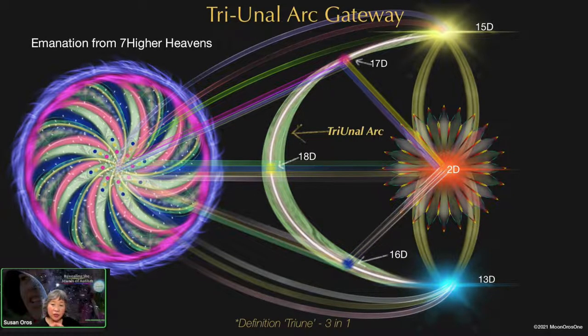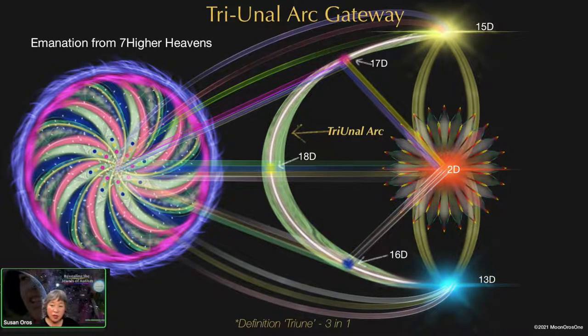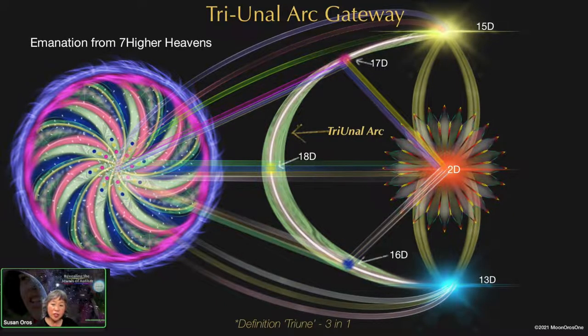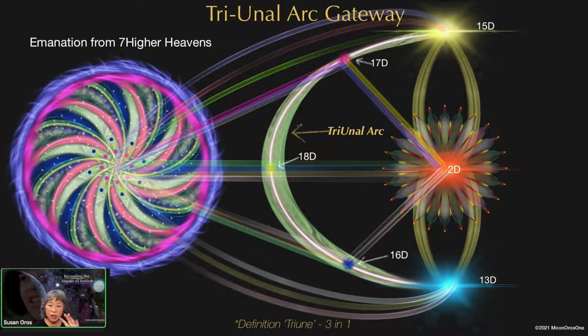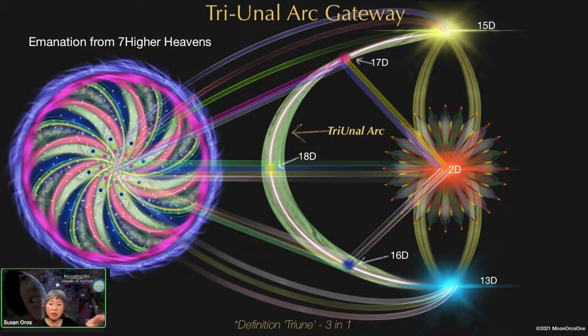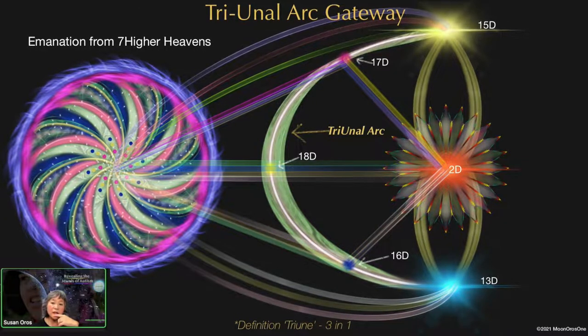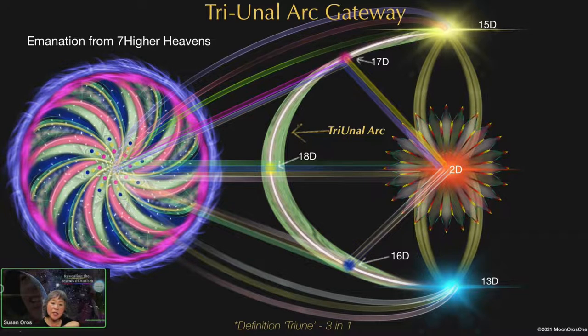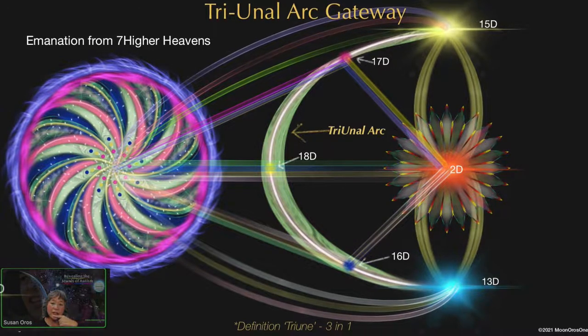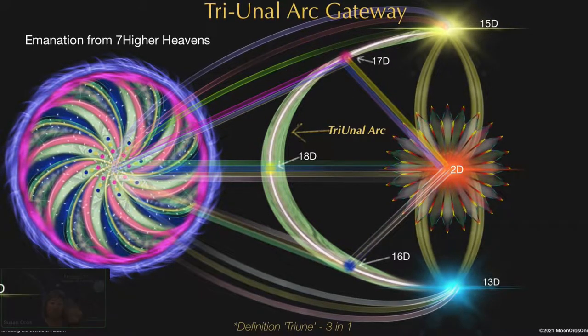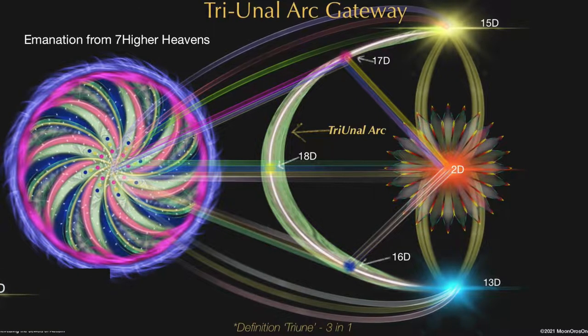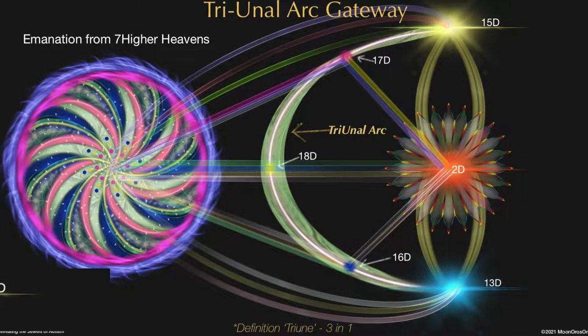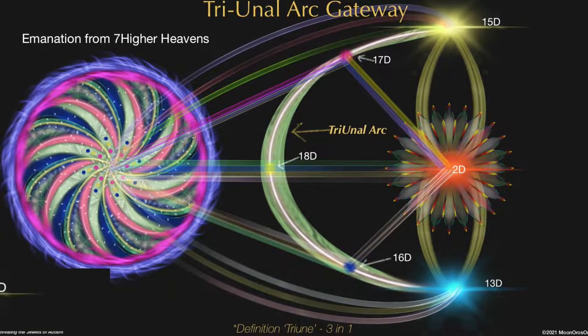Now, because our dimensions, they operate in threes, they're organized in threes. The first, second, and third dimension is harmonic universe 1. Fourth, fifth, and sixth is harmonic universe 2. Third harmonic universe is dimensions 7, 8, and 9. The fourth harmonic universe is 10, 11, 12. And so now we have the sixth harmonic universe, which is 16, 17, and 18.